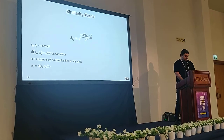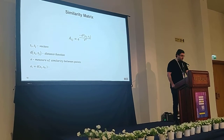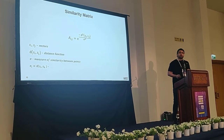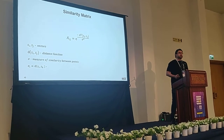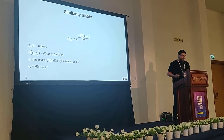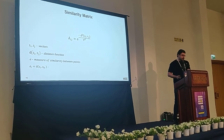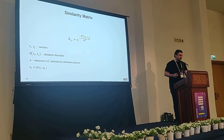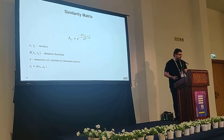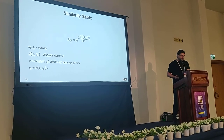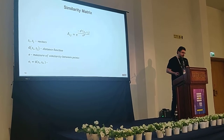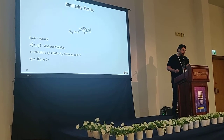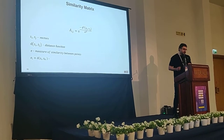Let's start with the definition of the similarity matrix. Each element of the similarity matrix at index ij equals e to the power of minus the squared distance between two vectors over squared sigma, where si and sj are two vectors. The distance between si and sj is the distance between two vectors, and sigma is a measure of similarity between two points — usually selected manually, though it can also be determined automatically by running clusters many times with different values and selecting the one producing the least distorted cluster. We calculate sigma_i for each data point si by analyzing the neighborhood of each point, defining sigma_i as the distance d between si and sk, where sk is the k-th nearest neighbor of point si.